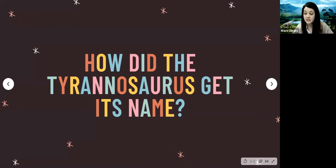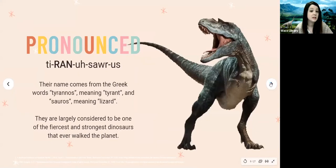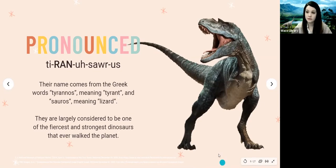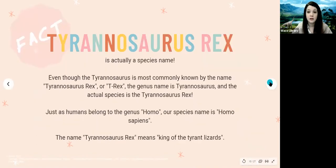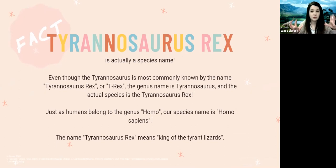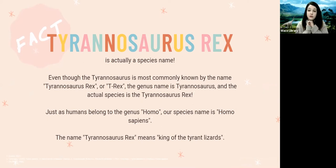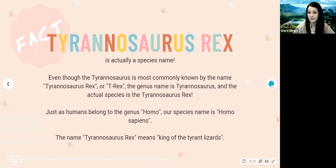How did the Tyrannosaurus rex get its name? The name comes from the Greek words 'Tyrannos,' meaning tyrant, and 'Sauros,' meaning lizard — reflecting that they are largely considered one of the fiercest and strongest dinosaurs that ever walked the planet. A fun fact: Tyrannosaurus rex is actually a species name. Their genus name is Tyrannosaurus, and their full species name is Tyrannosaurus rex — just as humans belong to the genus Homo with the species name Homo sapiens. Tyrannosaurus rex means 'king of the tyrant lizards.'